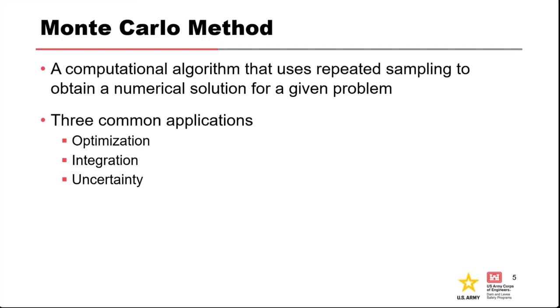Integration — solving integrals — is the second type. Conceptually, this is the area under a curve. For example, the risk equation, which is an integral combining hazard, system response, and consequences, can be solved with Monte Carlo. Then uncertainty is probably the most common application, where we have some model with input variables that calculates an output. We can run the model deterministically, or we can say our inputs have uncertainty and ask how that uncertainty propagates through the model and what the uncertainty is in our output.